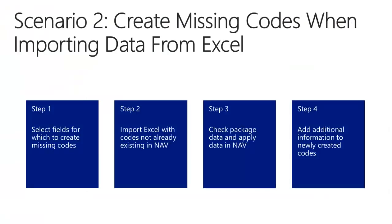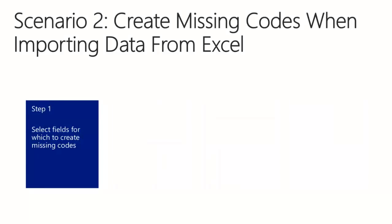In the second scenario, I will use the function to create missing codes when importing data from Excel. I will do this by first selecting fields for which to create missing codes, then importing from Excel with codes not already existing in NAV, checking the package data and applied data in NAV, and finally adding additional information to the newly created codes.